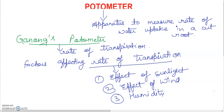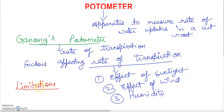There will be more transpiration, hence there will be more uptake of water. But there are some limitations of the photometer also. We are going to discuss these limitations here — why the photometer is not entirely reliable. Mostly we use the photometer just to measure the rate of transpiration by comparison.